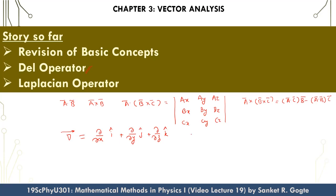We can operate this del operator onto a scalar field, which gives the gradient of the scalar field — a vector quantity. We can operate del onto a vector field to get a scalar quantity called the divergence of that vector field. Or we can take the cross product of the del vector with a vector field, which gives a vector quantity called the curl of the vector field.